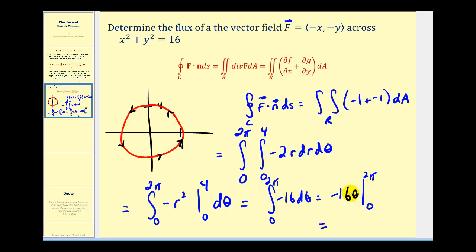So subbing in two pi, we're going to get negative thirty-two pi. And when theta is zero, we have zero. So our flux is equal to negative thirty-two pi.